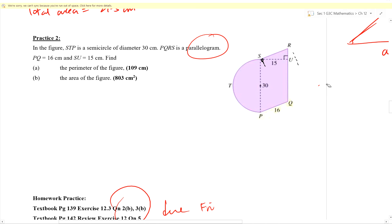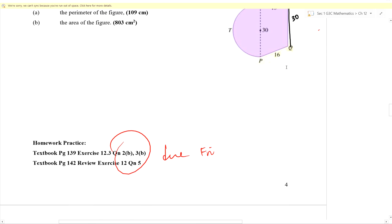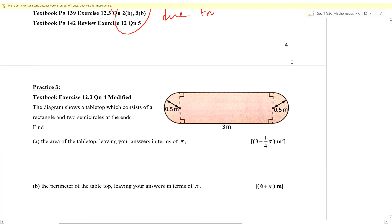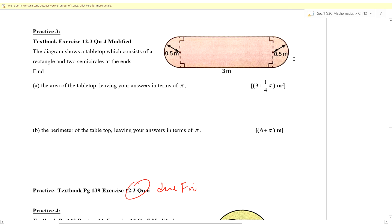But of course in this question, we don't have to go through all that trouble because they gave us information that this is a parallelogram. So this is 30. And if I drop a perpendicular down from S down to RQ, we already have the perpendicular height of 15. So from there, we can calculate the area quite easily. Since there were no issues with that, let's move on to exercise practice three.